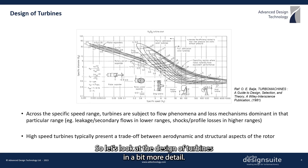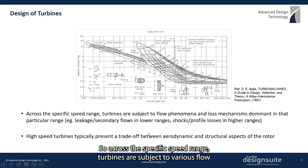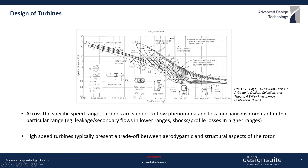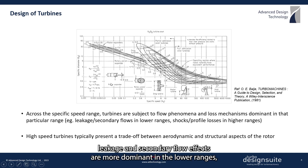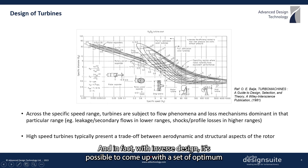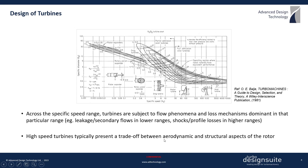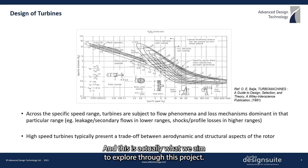Across the specific speed range, turbines are subject to flow phenomena and loss mechanisms which are dominant in that particular range. As you can see in this specific speed chart, leakage and secondary flow effects are more dominant in the lower ranges, whereas shocks and profile losses take priority in the higher ranges. With inverse design, it's possible to come up with a set of optimum design guidelines based on these fluid dynamic considerations for producing the dominant flow losses of your turbine, and this is what we aim to explore through this project.